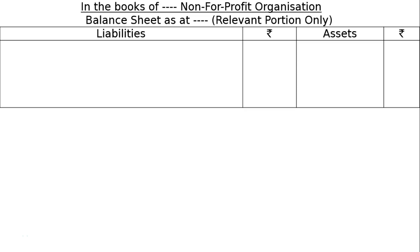Dear Students, welcome to the Classes of Ray Academy. Today we are studying Double Entry Bookkeeping, and the chapter is on NPO – Financial Statements of Not-For-Profit Organizations. We are studying Fund-Based Accounting. The question is: how are the following items presented in the Financial Statement of a Not-For-Profit Organization?